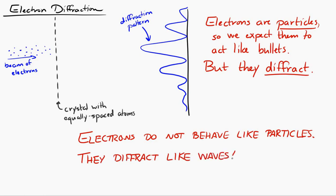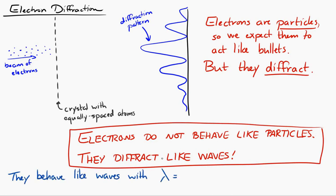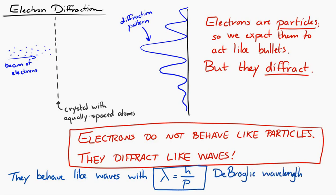The electrons behave like waves with a given wavelength called the de Broglie wavelength, given by the equation lambda = h/p, where h is Planck's constant and p is the momentum of the electron or whatever particle we're looking at. This is odd because electrons, which we normally think of as particles, are here acting like waves.